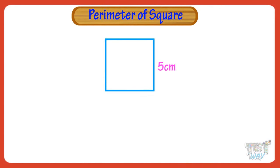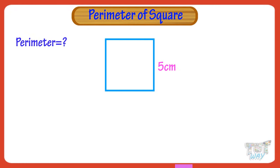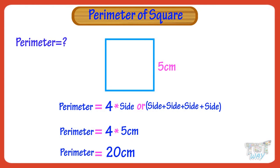Here we have a square with its side given. Its side measures 5 cm. We have to find its parameter, that is, the length of the boundary of the square. If the side is given, we can find the parameter using the formula: parameter equals 4 multiplied with side. Here side is 5 cm. So, parameter is 4 multiplied with 5, which equals 20. So, parameter is 20 cm.